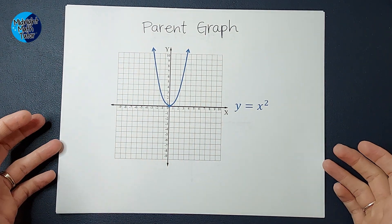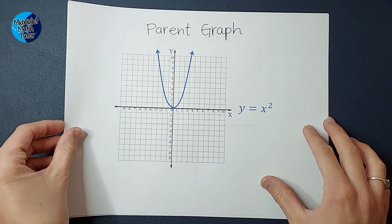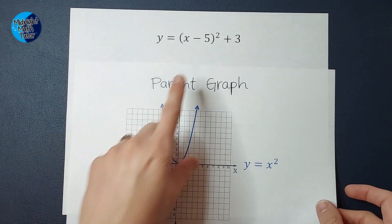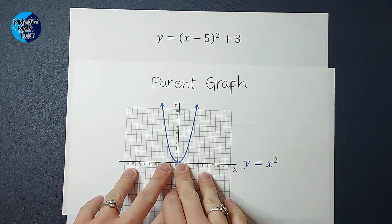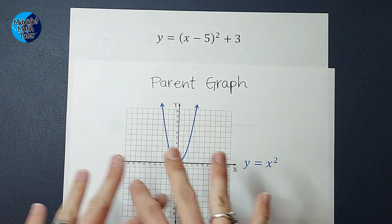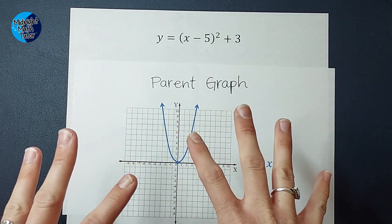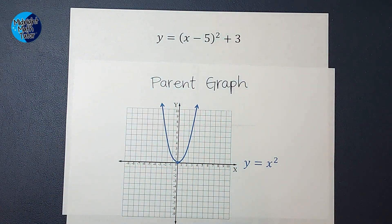So when it's a little bit different, right, the one we are trying to graph is not y equals x squared. We've got that minus 5 in those parentheses and a plus 3. It is going to be this same graph, it's just going to be shifted a little bit, and we're going to learn how to tell what that is.